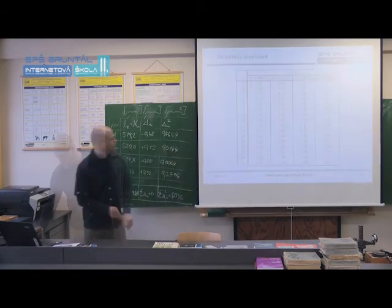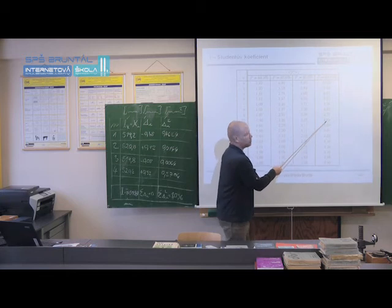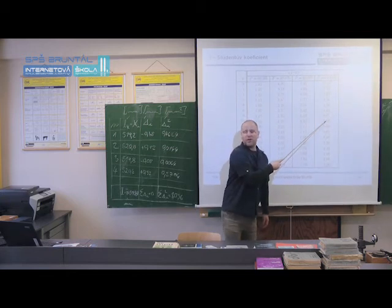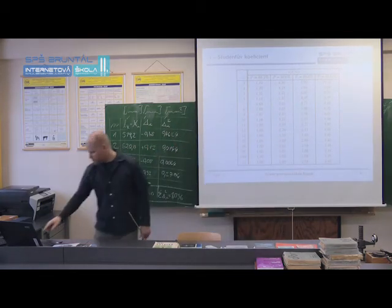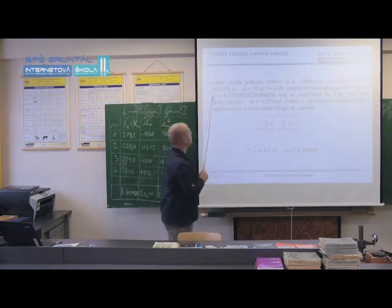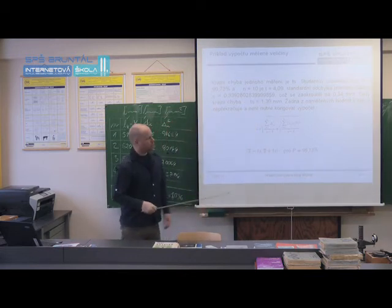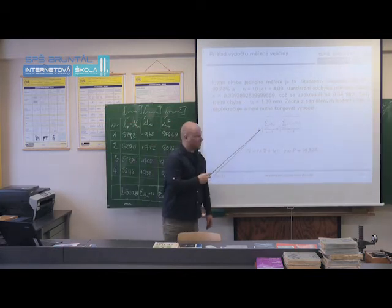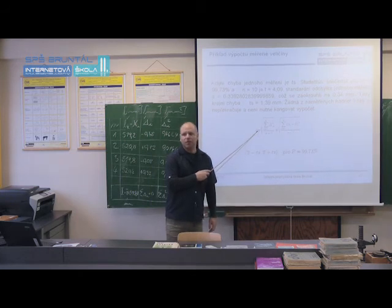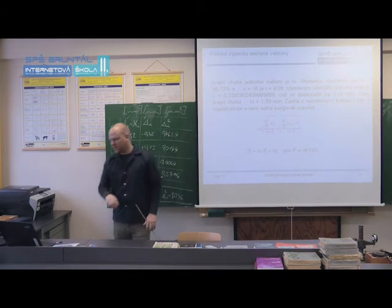Let me check if that's correct. 10 measurements, 99.73, I check 4.09. I see, right? So I'll take that as correct. Standard deviation of one measurement is S equals this number, it will come out on the calculator. Guys, this again, this is the second formula that I will want you to know. Guys, what is the difference between S and Sx̄? Tell me, look.